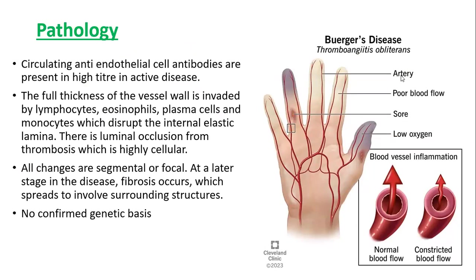Pathologically, circulating anti-endothelial cell antibodies are present in high titer in active disease. The full thickness of the vessel wall is invaded by lymphocytes, eosinophils, plasma cells, and monocytes, disrupting the internal elastic lamina. There is luminal occlusion from highly cellular thrombosis. All changes are segmental or focal, not diffuse. At a later stage, fibrosis may involve surrounding structures. There is no confirmed genetic basis for this disease.